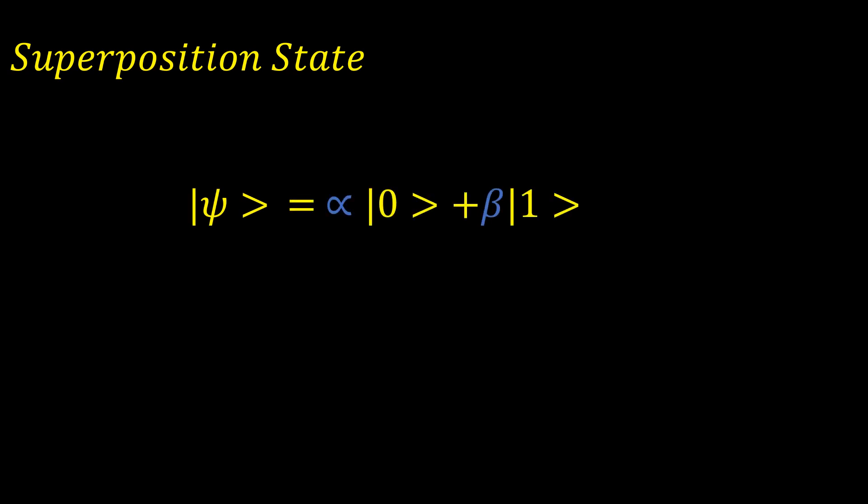We also have the superposition state, mathematically represented as |ψ⟩ = α|0⟩ + β|1⟩, where |ψ⟩ is the quantum state and |0⟩ and |1⟩ you already know. Alpha and beta are complex numbers — these are really important, so note them down as we will come back to them in future videos.